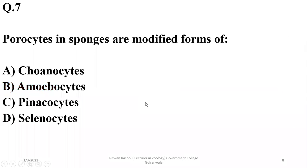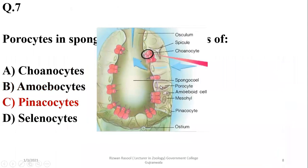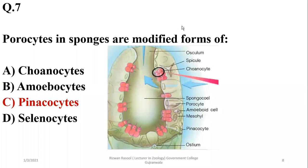Number seven: Porocytes in sponges are modified forms of pinacocytes or outer cells. You can see a porocyte here—they are modified forms of pinacocytes.